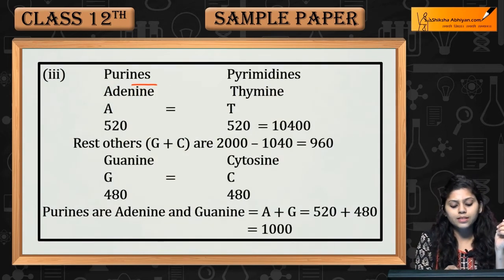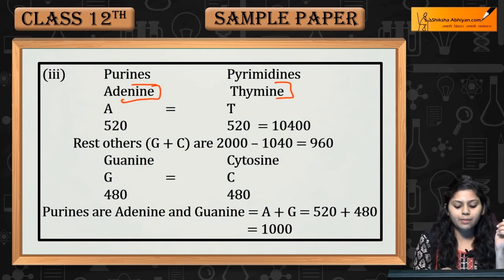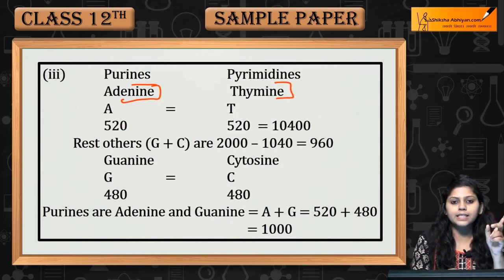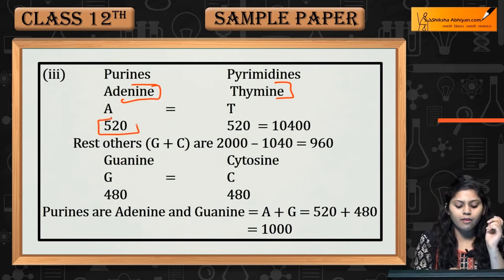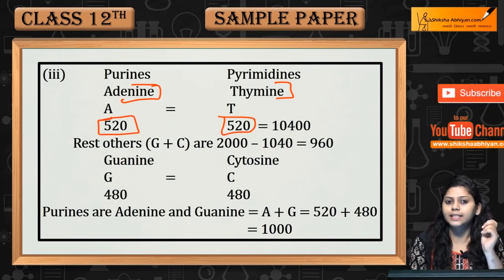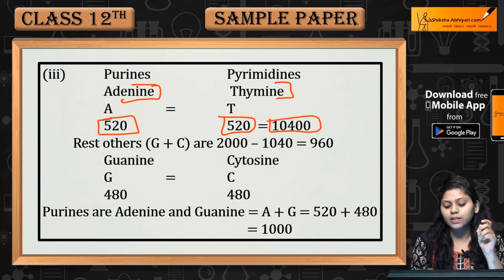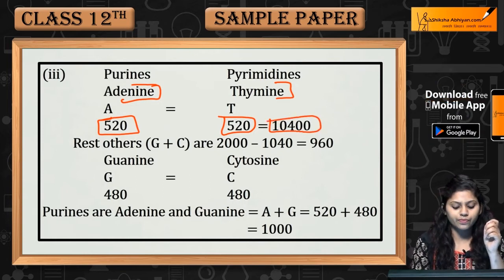So purine adenine pairs with pyrimidine thymine. If adenine is 520, then thymine is also 520. Total A plus T equals 1040.